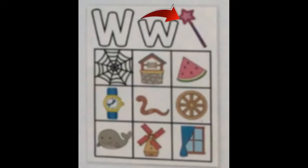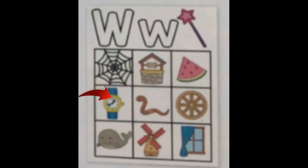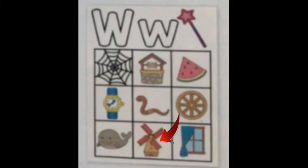What are the things that begin with the letter W? W is for wand, web, well, watermelon, watch, worm, wheel, whale, windmill, and window. They all begin with the letter W, and they all have the wuh-wuh sound.